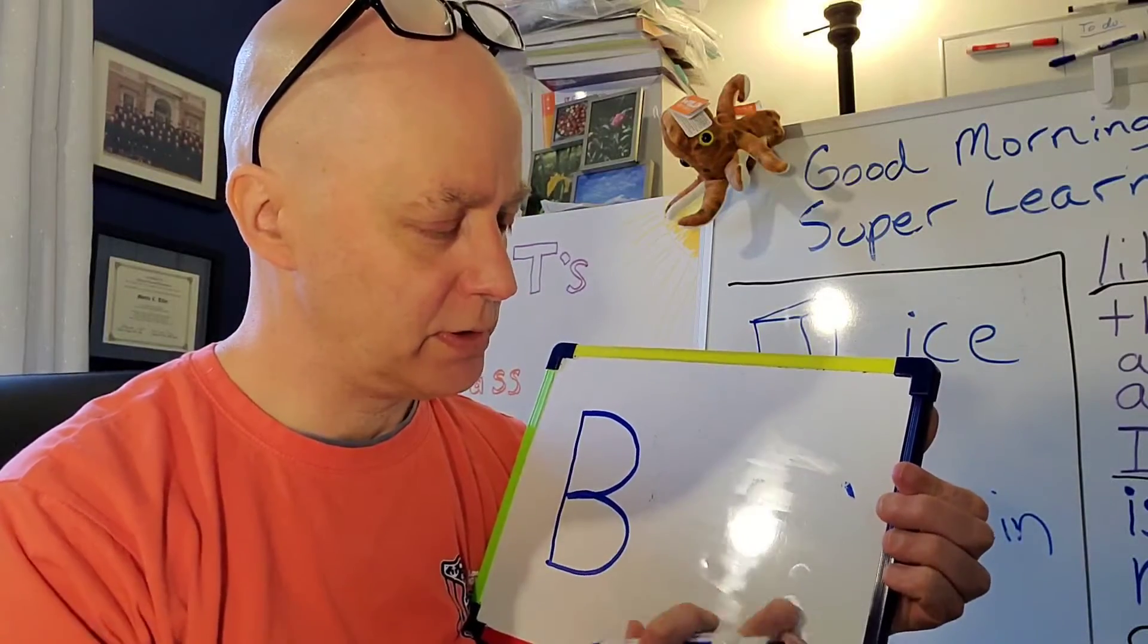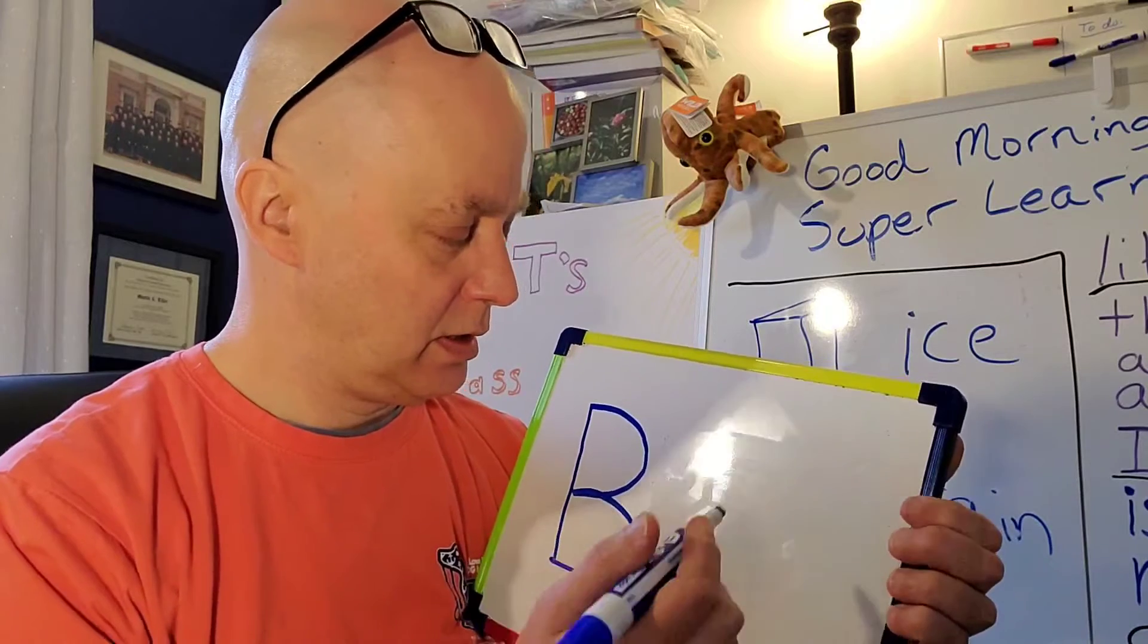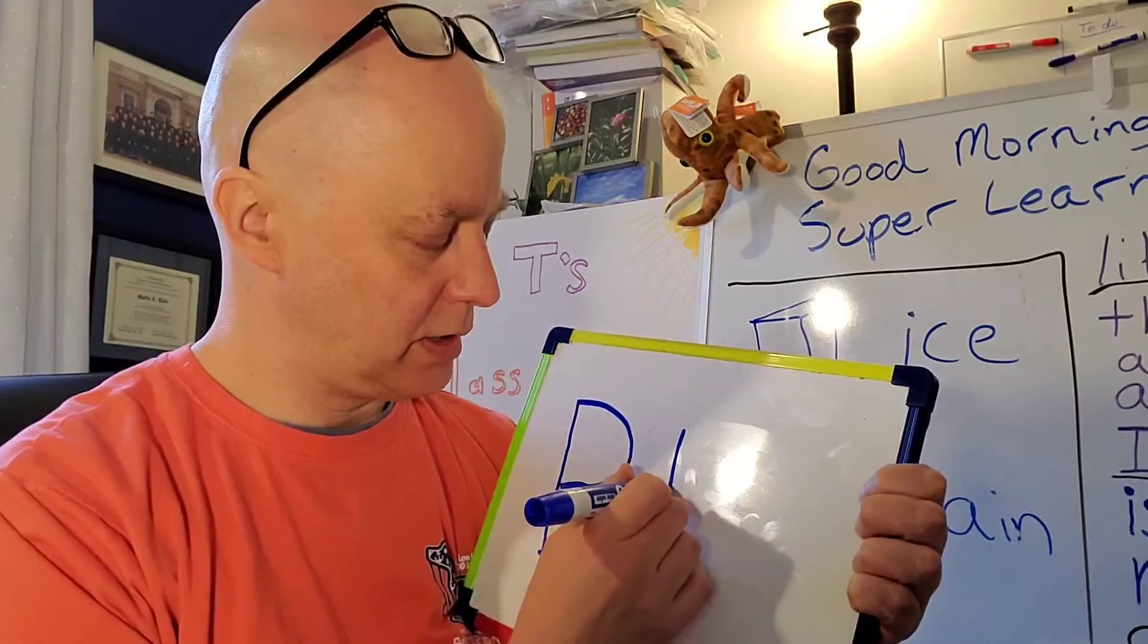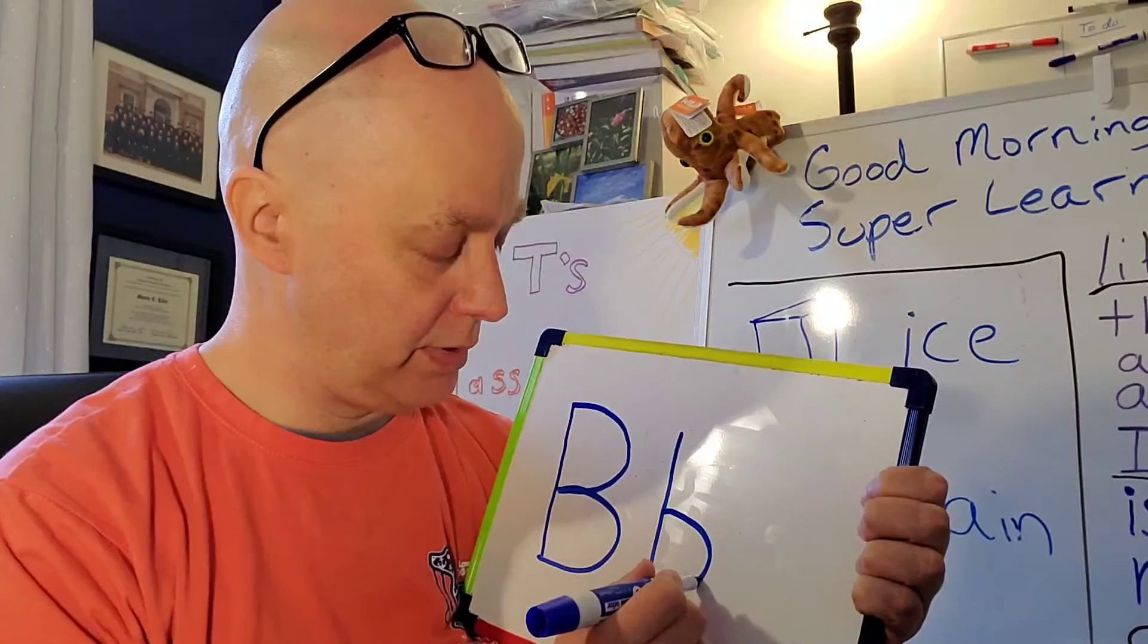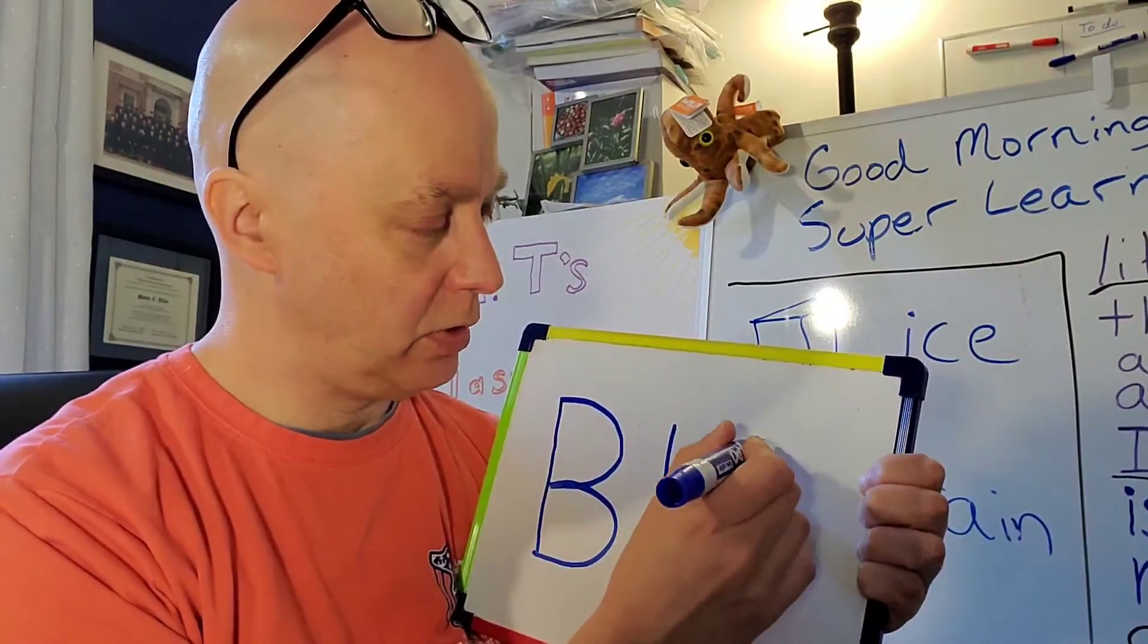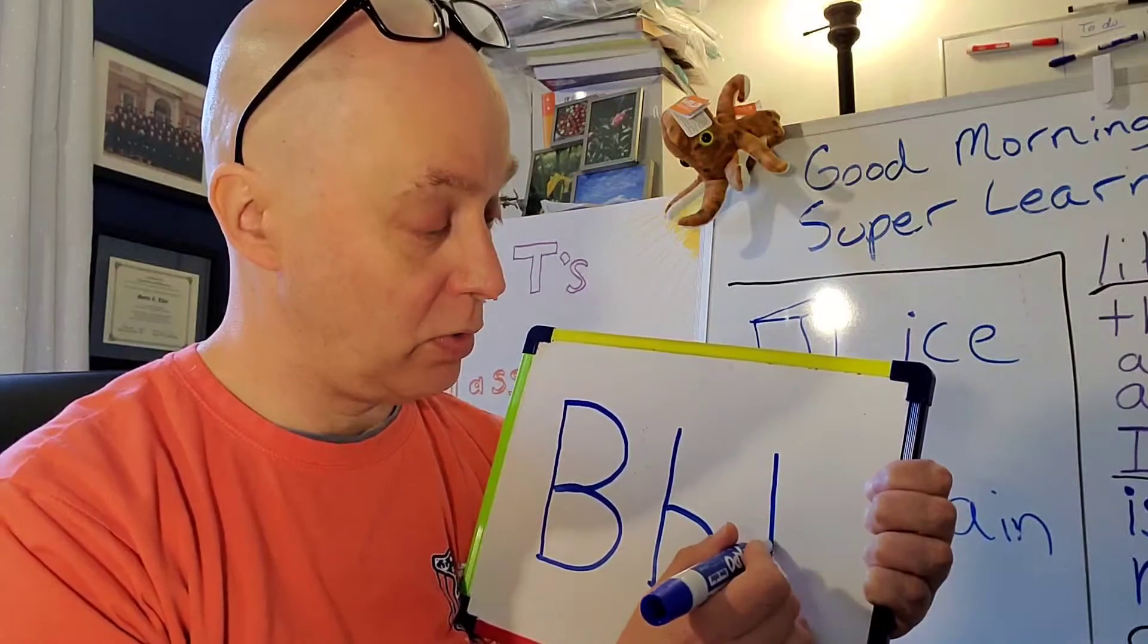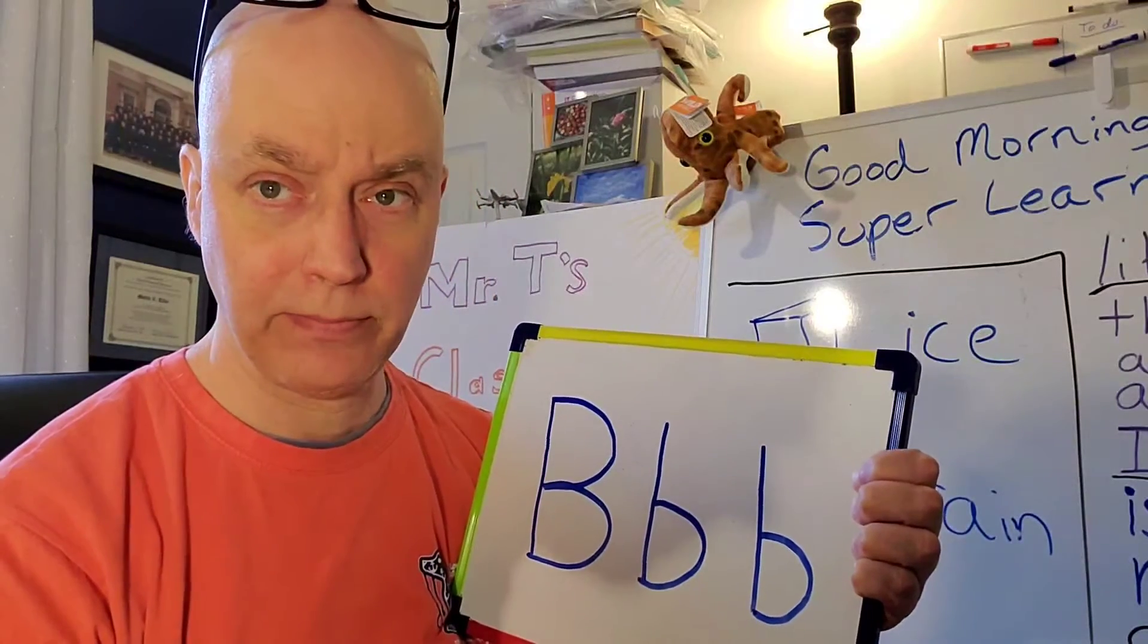And then I want you to notice that the lowercase B looks just like this. I draw one line down. And then I do one bump down there at the bottom. Okay. I'm going to do it one more time. I'm going to draw one line down. I'm going to draw one bump down there at the bottom.